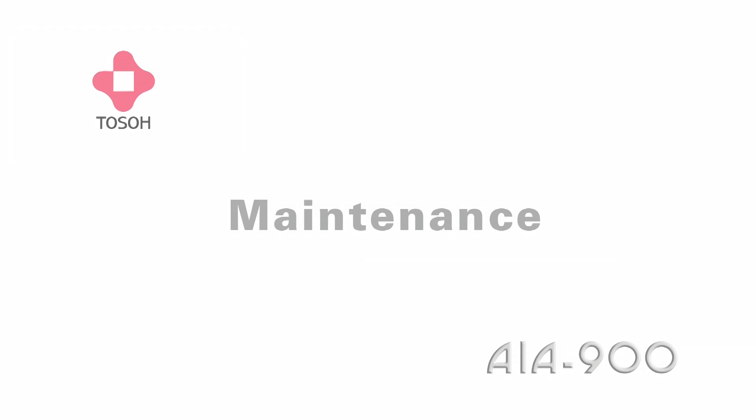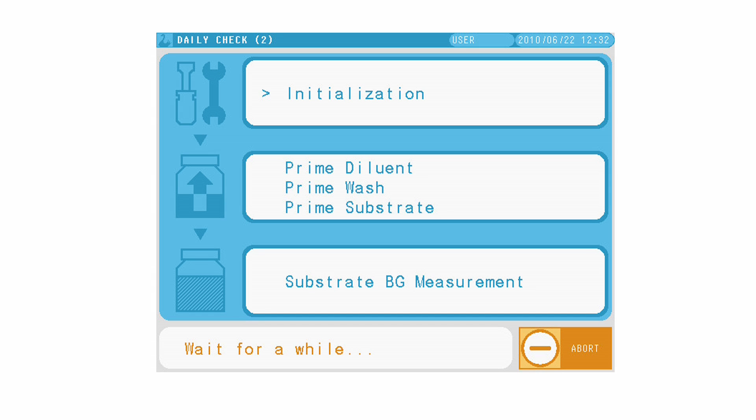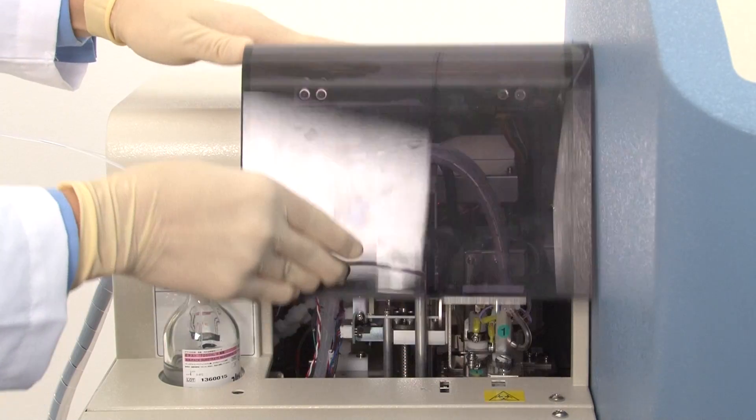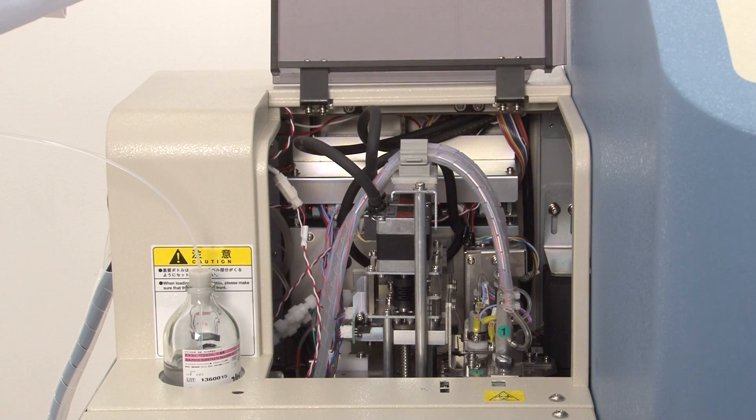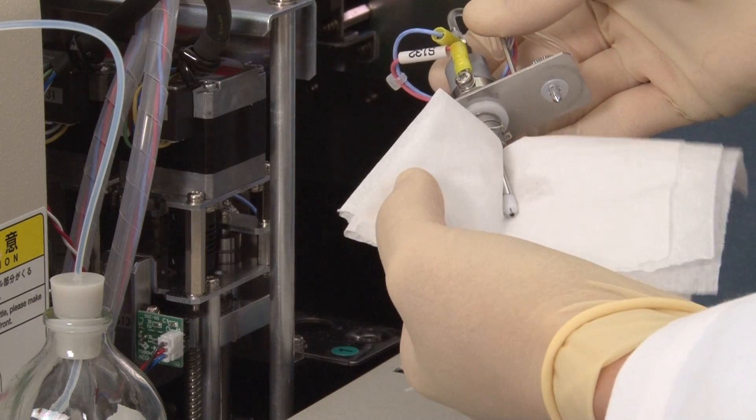Maintenance. Daily maintenance on the AIA 900 is totally automated and requires only five minutes per day at system startup. Weekly maintenance requires only a few minutes of operator time and involves a simple cleaning of the wash probes.